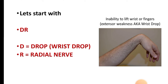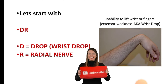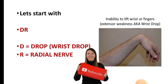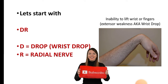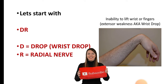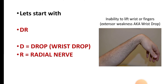Starting with wrist drop. To remember which nerve is responsible for wrist drop, use Dr. Kuma: DR — D for drop, wrist drop, and R for radial nerve. So radial nerve injury will cause wrist drop, which is the inability to lift the wrist or fingers — it is a weakness of the extensors.